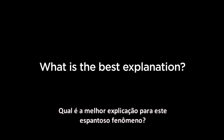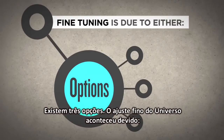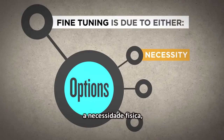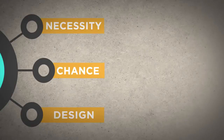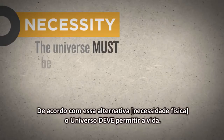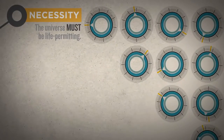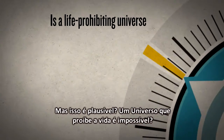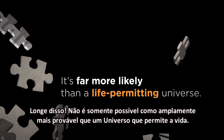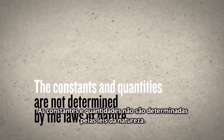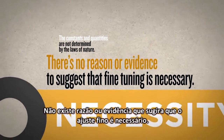What is the best explanation for this astounding phenomenon? There are three live options. The fine-tuning of the universe is due to either physical necessity, chance, or design. According to the first alternative, the universe must be life-permitting — the precise values of these constants and quantities could not be otherwise. But is this plausible? A life-prohibiting universe is not only possible, it's far more likely than a life-permitting universe. The constants and quantities are not determined by the laws of nature. There is no reason or evidence to suggest that fine-tuning is necessary.